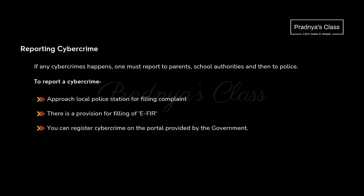If by mistake you become a victim of cyber crime, there are options to help. The cyber cell number is 1930 — call that number or file a complaint. You can also register a cyber crime complaint on the government's portal.